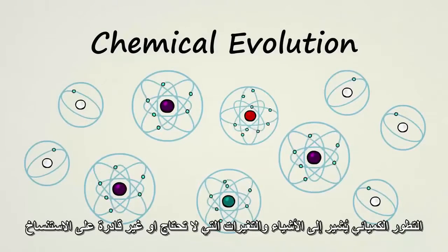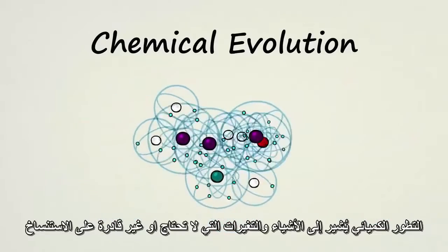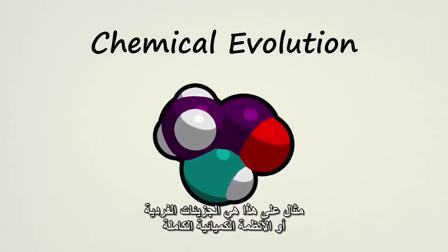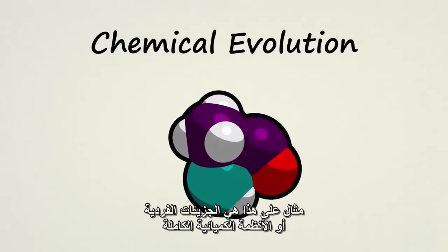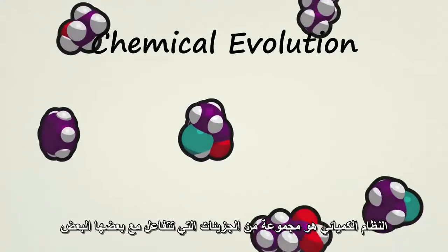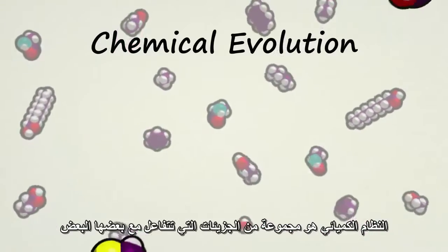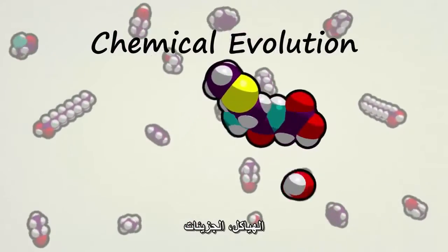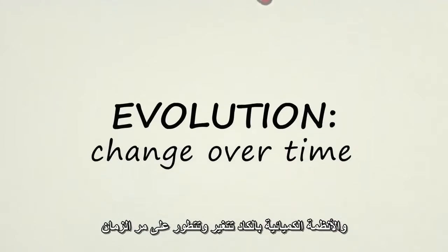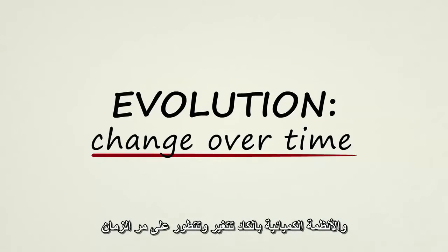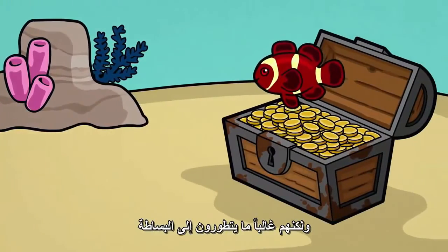Chemical evolution refers to changes in things that need not be capable of reproduction. Examples could be individual molecules or entire chemical systems. A chemical system is a group of molecules that interact with each other. Molecules, structures, and chemical systems almost always evolve or change over time, but they often evolve towards simplicity.